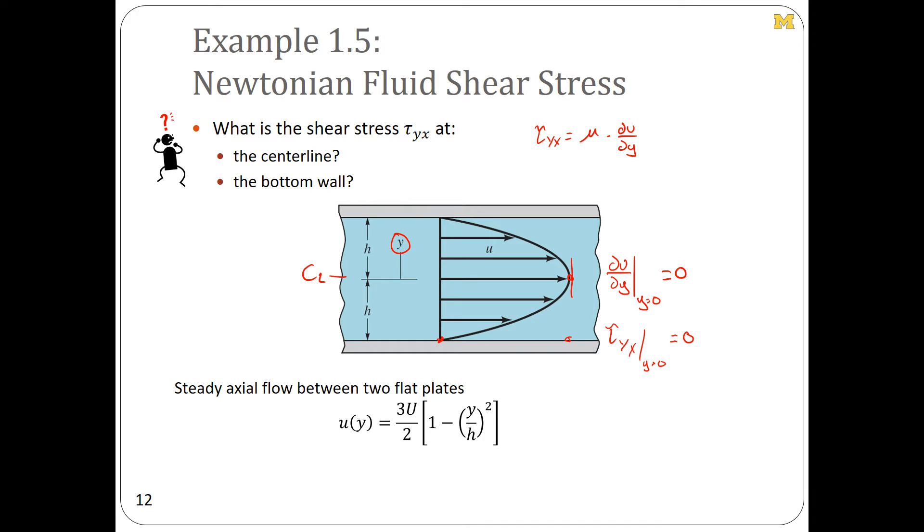What we determined is that du/dy at y equals negative h is equal to negative 3u over h, giving us the result that tau_yx at y equals negative h is equal to negative mu times 3u over h. Those were the two results for shear stress along the centerline and at the wall.